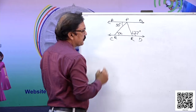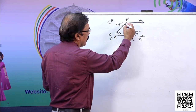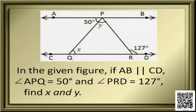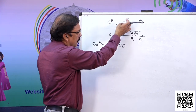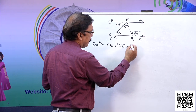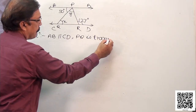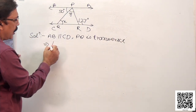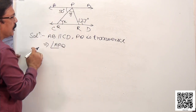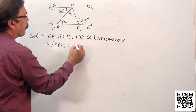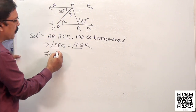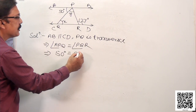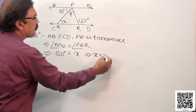Since AB is parallel to CD and PQ is the transversal, angle APQ equals angle PQR by the alternate interior angle theorem. Angle APQ is 50 degrees and angle PQR is x, so x equals 50 degrees.